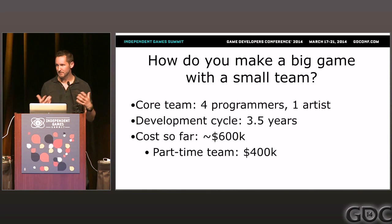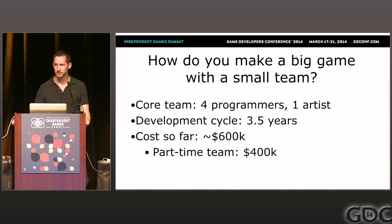We loved the science content so much that Jane Van Susteren actually plays a character by her own name in the game. After all, if we want to be serious about making positive role models for female scientists, why not have one directly play a character? That's been extremely well received by our community. From an indie standpoint, it might be a large team and budget, but the core team is four programmers and one artist — I'm the only full-time person, everyone else is part-time. The development cycle has been about three and a half years, and the cost so far is about $600,000, with $400,000 going directly to our part-time team.